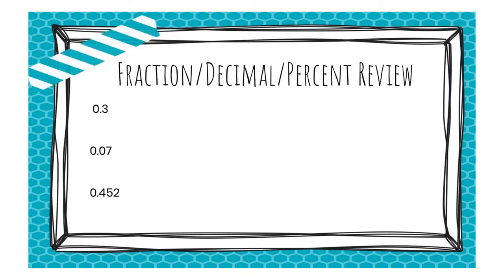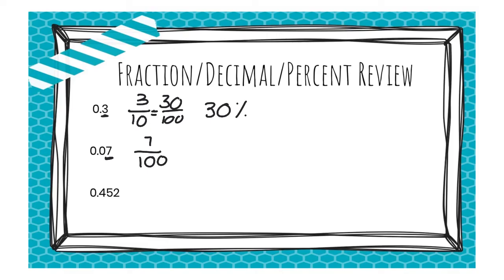Now let's take a look at changing decimals into fractions and percents. Remember, it's all about reading your decimals correctly. This is in the tenths place, so you would write 3 tenths. To make it into a percent, you can multiply 3 tenths by 100, which would tell you that it is 30%. To write an equivalent form out of 100, we multiply by 10, which gives us 30 out of 100. This next one is seven hundredths, so seven out of 100 would be seven percent. And this last one would be 452 thousandths, because it's in the thousandths place, which would be 45 and two tenths percent.